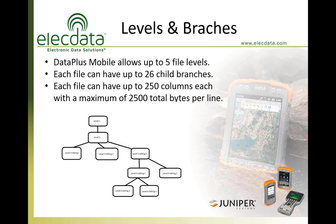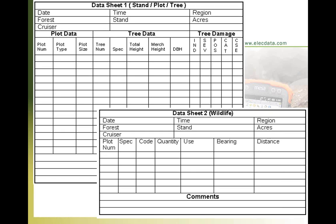Some new features in Data Plus Mobile include increased levels and branches. You can now collect data at up to five different levels. At any one level you can have up to 26 siblings or branches, and each can have 250 columns within the data collection portion. Looking at the forestry data sheet example will give you a better sense of what these levels look like in practice.